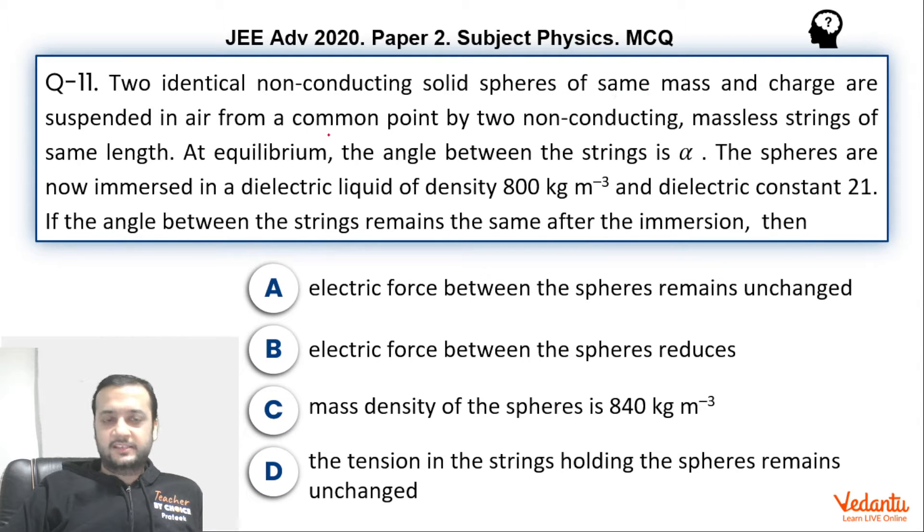Two spheres of same mass are suspended in air by a common point by two non-conducting massless strings of same length. In equilibrium the angle between the strings is alpha. So now they are immersed in a liquid of density 800 kg/m³ and dielectric constant 21 and the angle remains the same. So we have to comment upon whether electric force between these spheres has remained same or it has reduced. We have to compute the density of these spheres and we have to comment upon the tension whether it remains the same or unchanged.